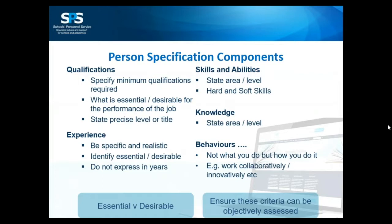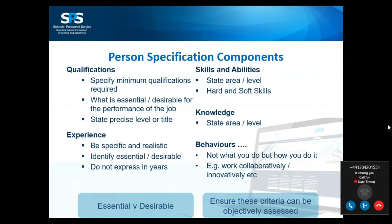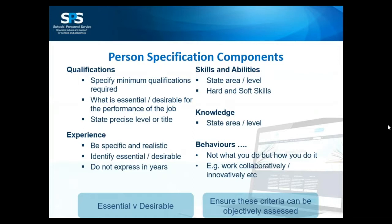When thinking about all the elements of the person specification, a word of warning: think about criteria that can be objectively assessed. You'll want to use the person specification as your checklist through the recruitment process, and you need to be able to objectively assess whether someone meets those criteria. For example, a statement referring to someone having 'a good sense of humour' is something we often see, but think about how you would objectively assess that. You might want to reword it — perhaps 'a strong team-working ethos' — something you can more objectively assess.